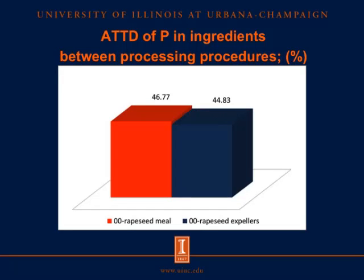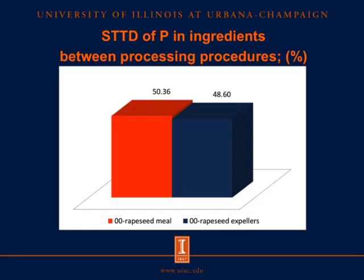For ATTD of phosphorus in 00 rapeseed products from different oil extraction procedures, orange bars represent 00 rapeseed meal and blue bars represent 00 rapeseed expellers. ATTD and STTD of phosphorus in 00 rapeseed meal and 00 rapeseed expellers were not different.